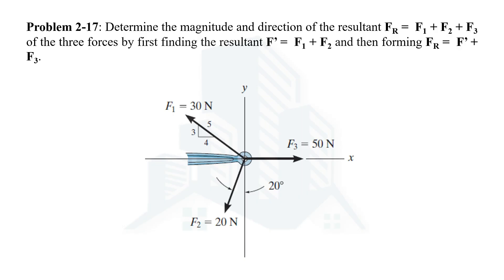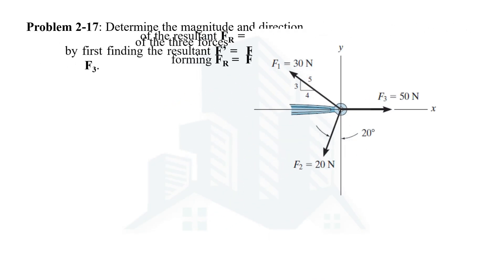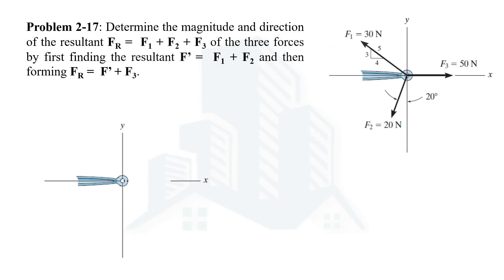There are three forces acting on this body and we are asked to determine their resultant. First, we determine the resultant of two forces F1 and F2, calling it F'. Once we have F', we use F' and F3 to determine the magnitude of the resultant of all three forces. So the process is: add the first two forces, replace them with F', then combine F' and F3.